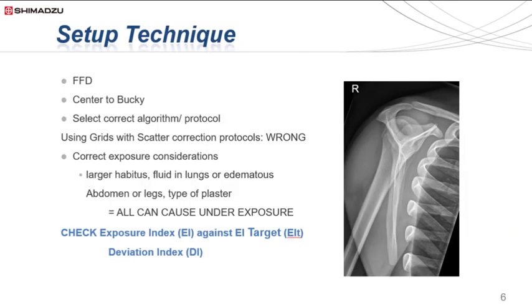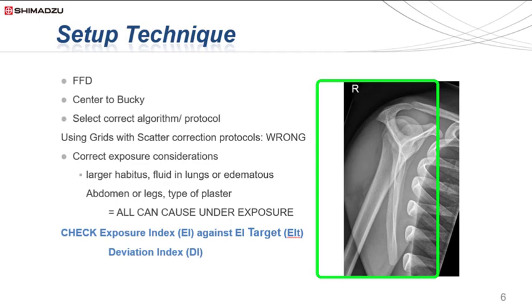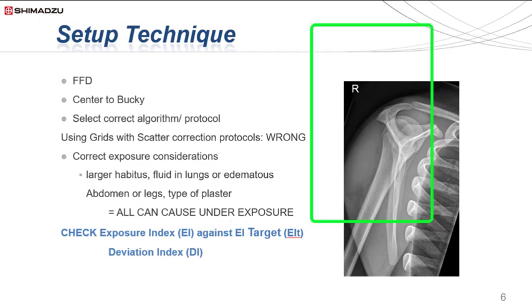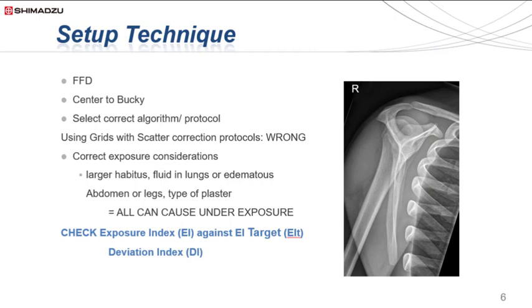To avoid underexposure whilst using AEC, ensure that both the tube and the patient's anatomy to be imaged is positioned in the centre of the bucket. Take for example a lateral shoulder projection — if the shoulder is positioned too lateral or too high on the erect bucket away from the centre AEC sensor, then the resultant image will have an adequate exposure of the lungs and ribs but an underexposed image of the scapula and humerus.